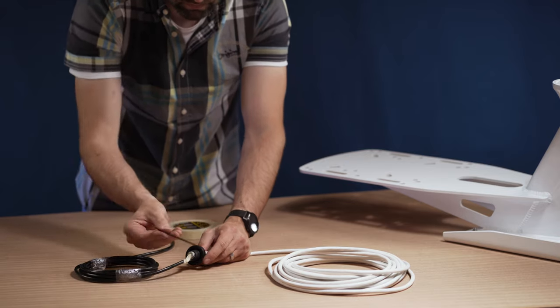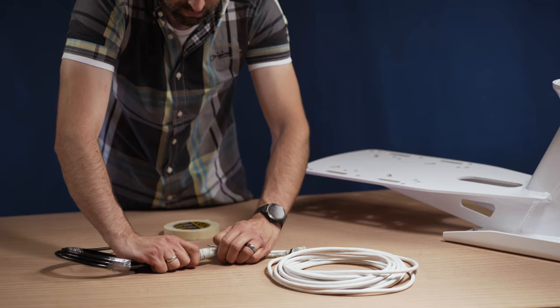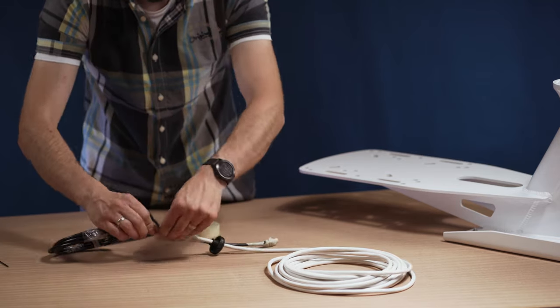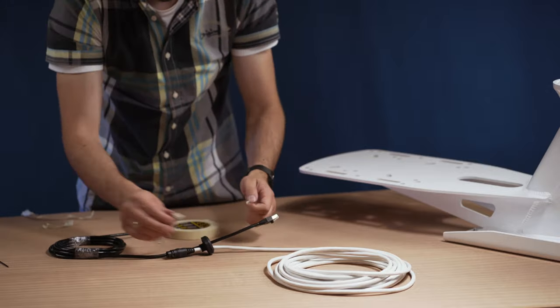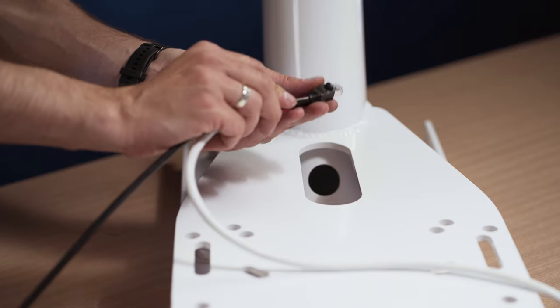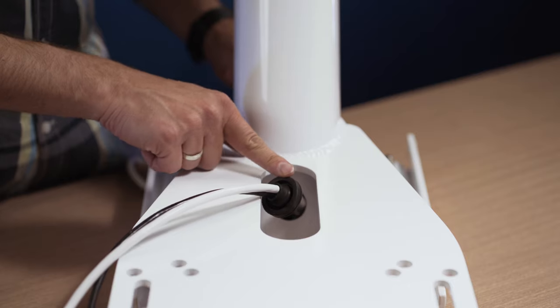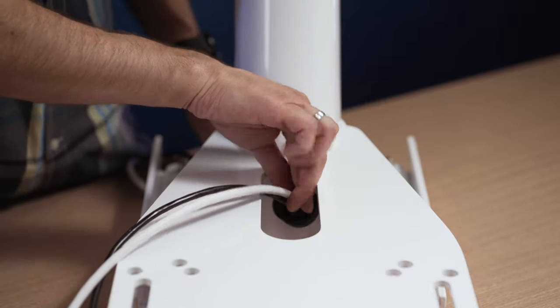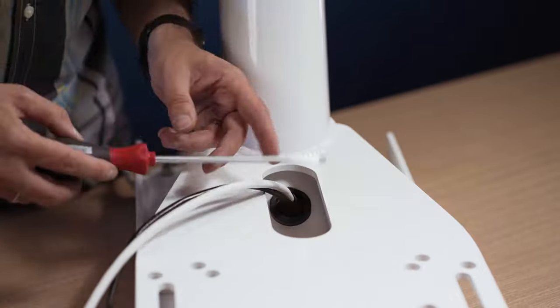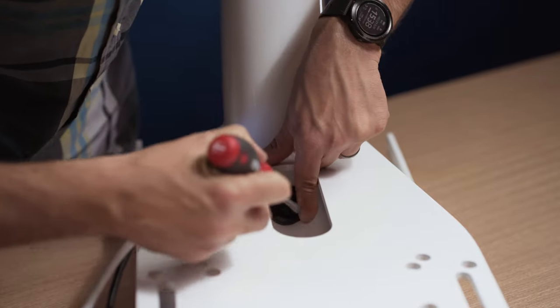A small Allen key can help. Finally, push both cable ends through the mount and fit the rubber seal. Use a screwdriver to help but be careful not to damage the seal.